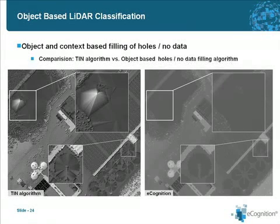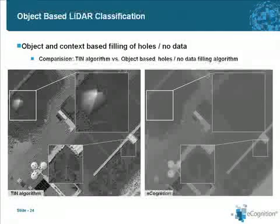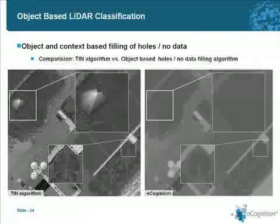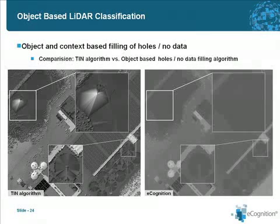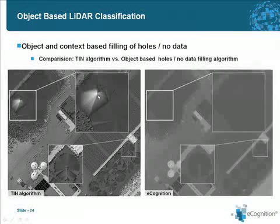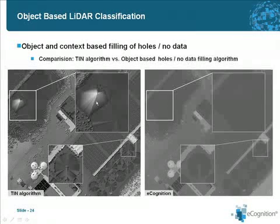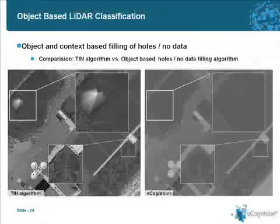Here we see two images. The one on the left is a raster representation of a point cloud that has been interpolated by a generic triangulation method. On the right side, you see the same image imported into eCognition with the object-based holes filling algorithm applied. You can see that spike points cause ramping effects in the water areas in the triangulation version, while in the eCognition version those areas remain homogeneous. Segmenting the image from the right side will deliver much better results.